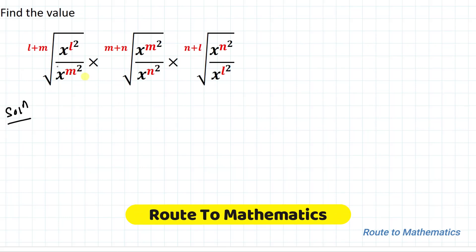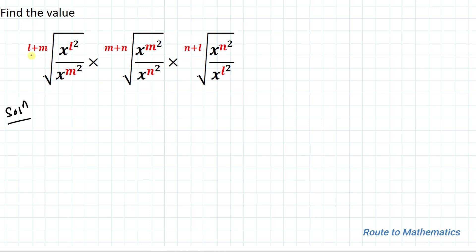Welcome to Root to Mathematics. In this video we are going to find the value of this exponential term. The given question is the (l+m)th root of x to the power l squared divided by x to the power m squared, multiplied with the (m+n)th root of x to the power m squared divided by x to the power n squared, multiplied with the (n+l)th root of x to the power n squared divided by x to the power l squared. To simplify this we need to use some exponential rules. Let's start the solution.